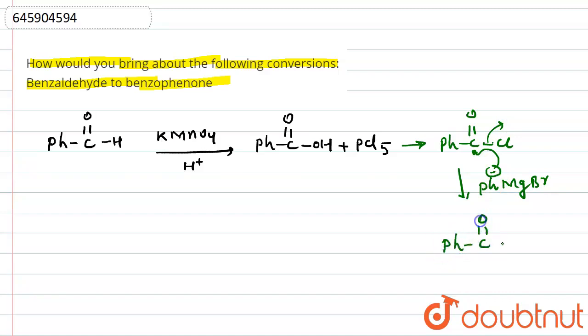form as Ph-C double bond O-Ph, and the name of this compound is known as benzophenone.